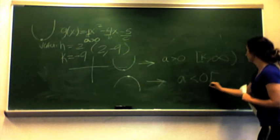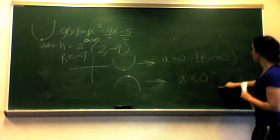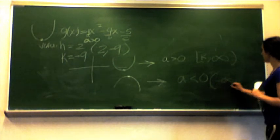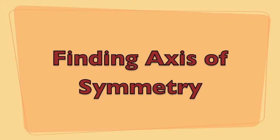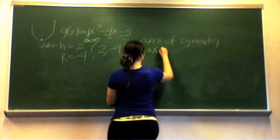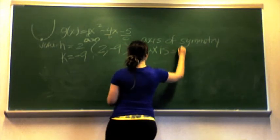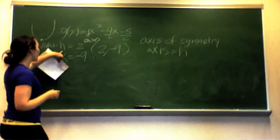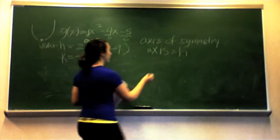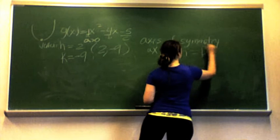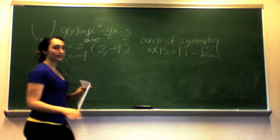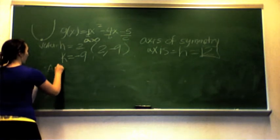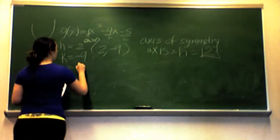And when a is less than 0, the range goes from negative infinity to k. The axis of symmetry is equal to h, and from our vertex we found h equals 2. So our axis of symmetry is x = 2. That's a really easy step to identify.